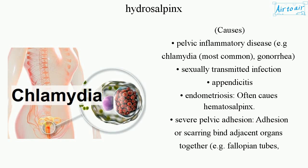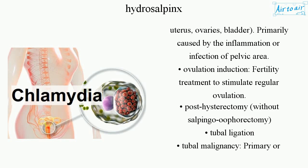Adhesion or scarring binds adjacent organs together — e.g., fallopian tubes, uterus, ovaries, and bladder — primarily caused by inflammation or infection of the pelvic area. Ovulation induction is a fertility treatment to stimulate regular ovulation. Post-hysterectomy and tubal ligation are also causes.